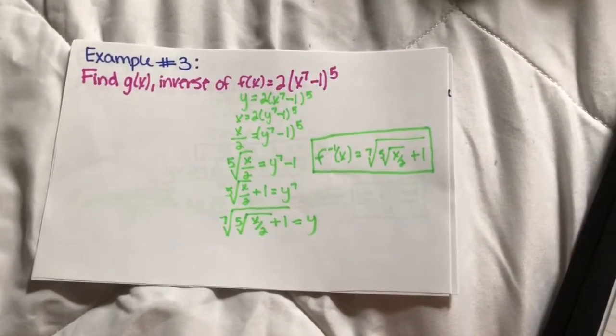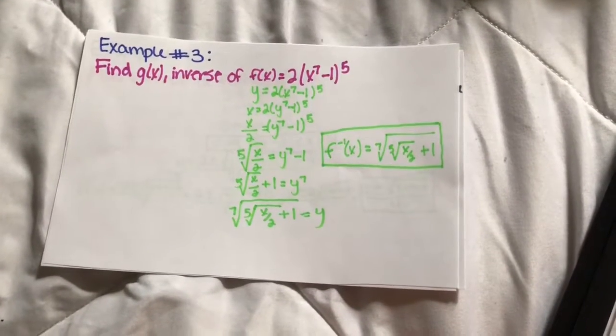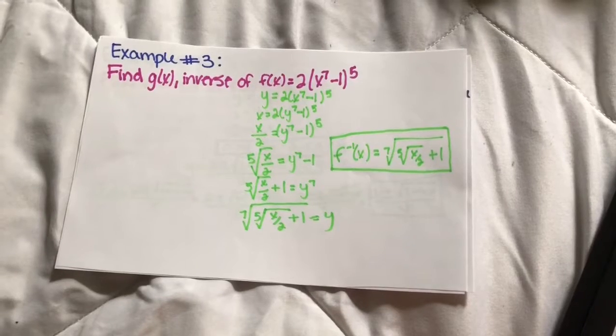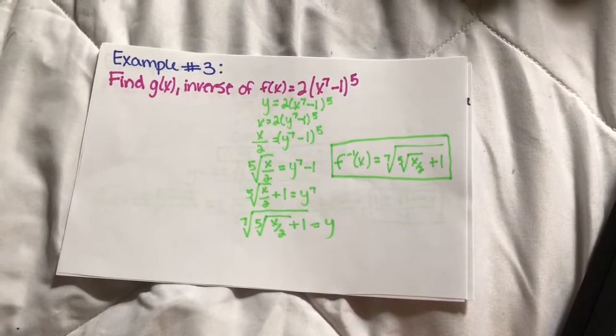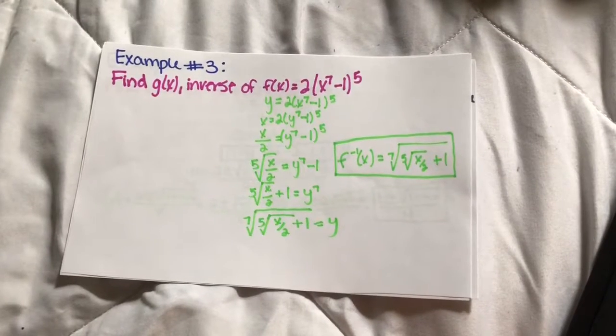Change f(x) to y, then switch x and y. After you take the x and divide it by 2, you're going to want to get rid of the 5th power. You move it to the other side and get the 5th root of (x/2) equals y⁷ - 1.